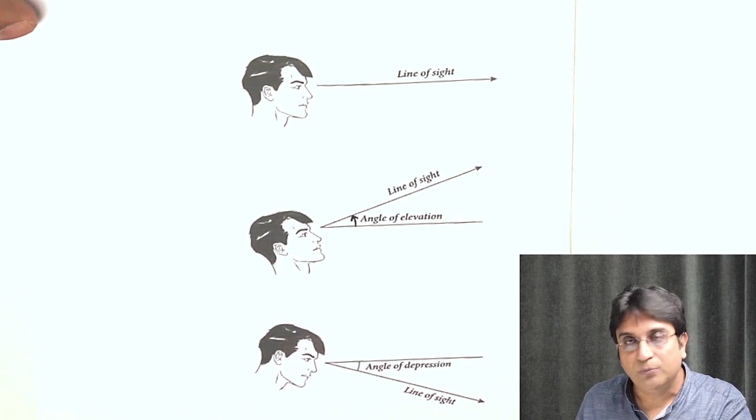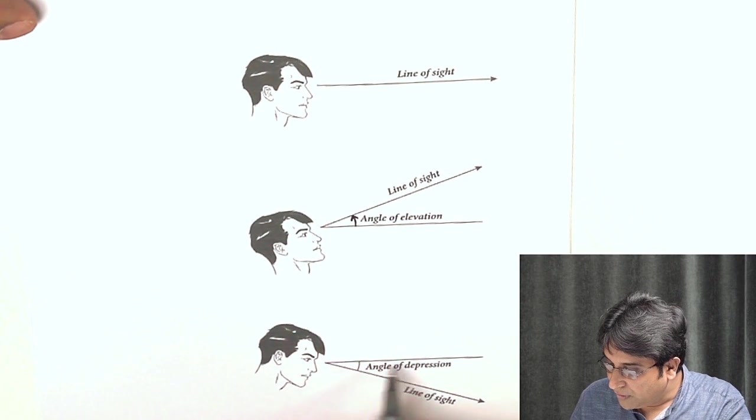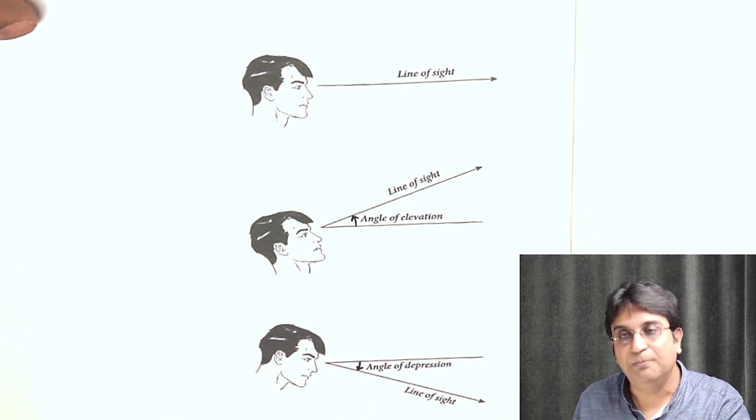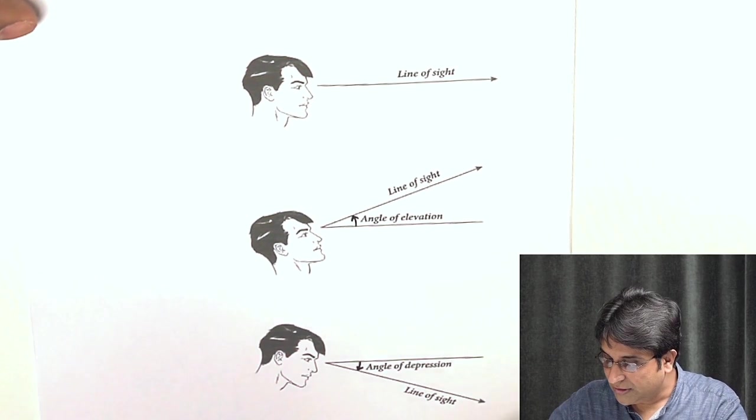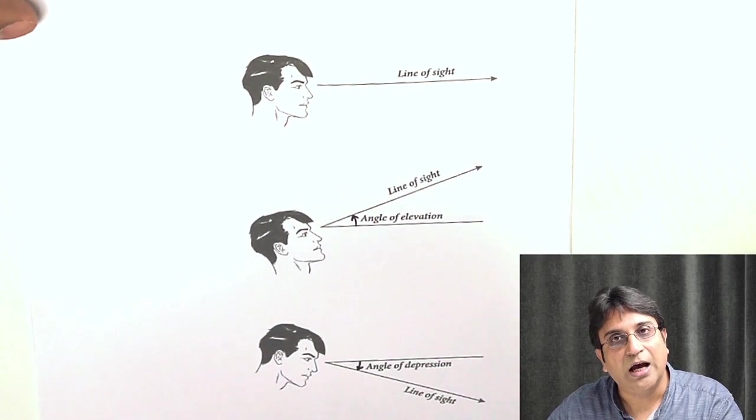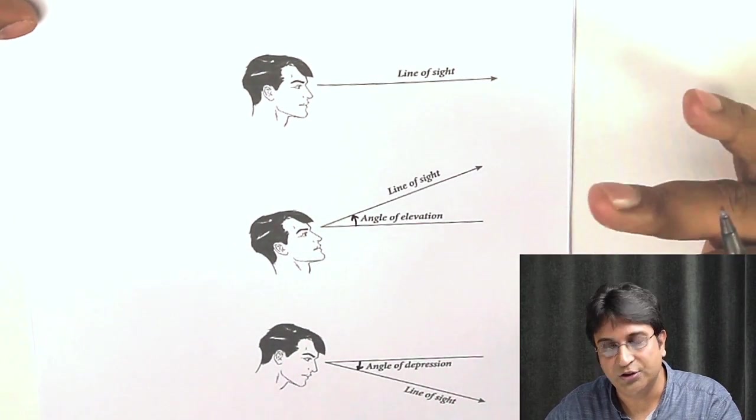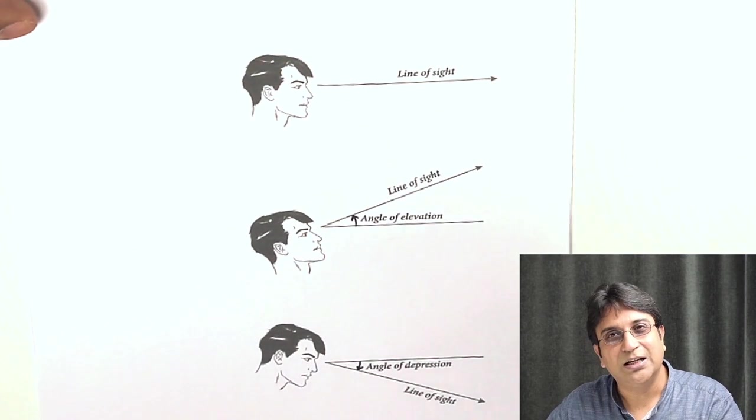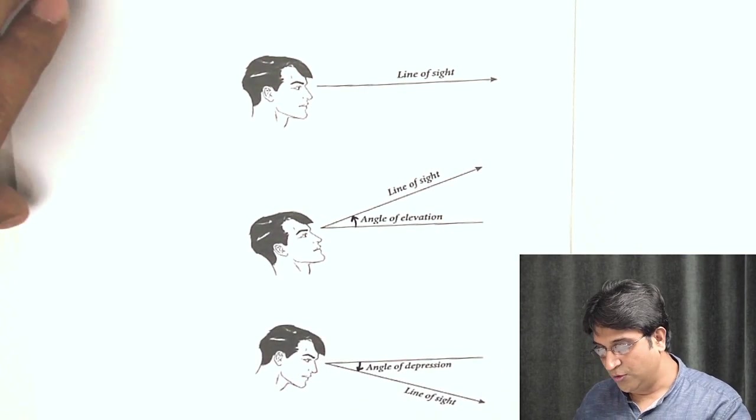Again, if you're looking at something down below, the angle between the horizon and the line of sight is known as the angle of depression. So these concepts of line of sight, angle of elevation, and angle of depression you will come across very often. Note the basic idea down and make sure that you remember it.